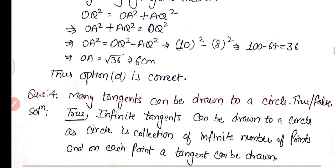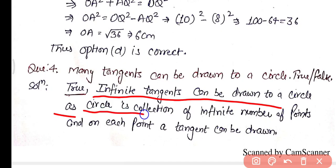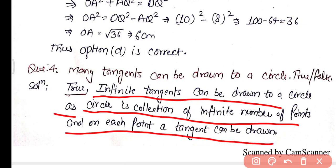Question number four: many tangents can be drawn to a circle — true or false? This statement is true. A circle is a collection of infinite number of points, and on each point a tangent can be drawn, so infinite tangents can be drawn to a circle. Therefore, the statement is true.